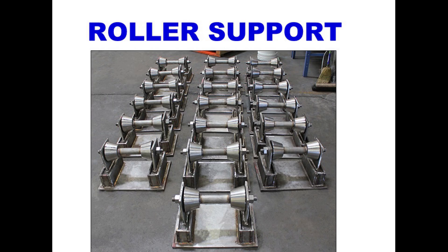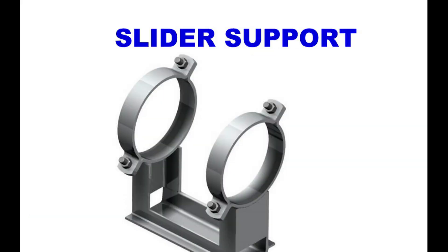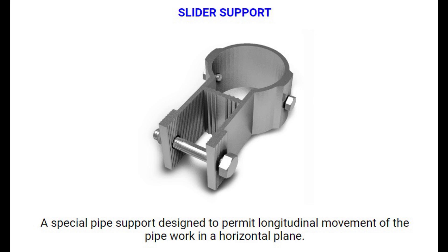Number 7: Roller Support. A roller on which the pipe rests, permitting axial movement in a horizontal plane. Number 8: Slider Support. Slider Support is a special pipe support designed to permit longitudinal movement of the pipework in a horizontal plane.